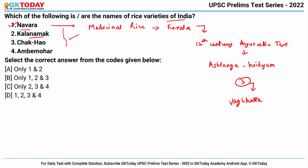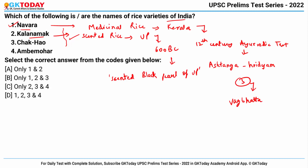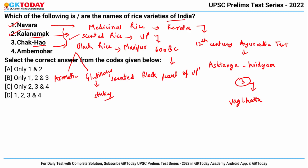Second is Kala Namak — a scented rice variety that originated from the state of Uttar Pradesh and has been in cultivation since 600 BC. It is called the scented black pearl of Uttar Pradesh due to its nice fragrance. Third is Chakhao — a black rice variety cultivated in the state of Manipur with two important properties: it is aromatic and has glutinous (sticky) properties. So this is also correct.